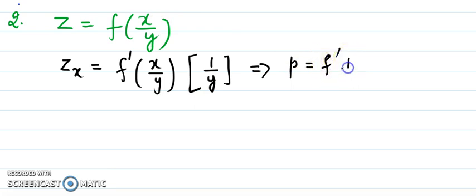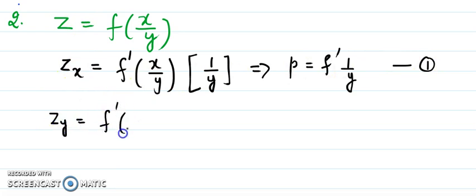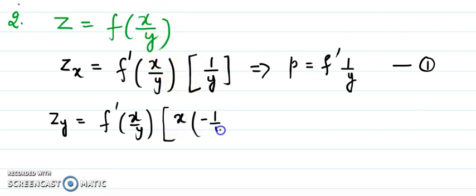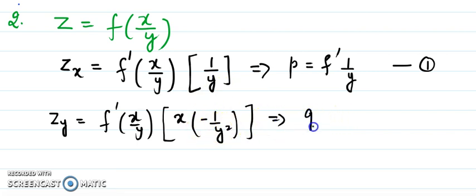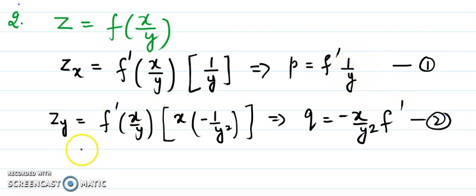Now differentiate with respect to y. We have f'(x/y), and the derivative of (x/y) with respect to y is -x/y². So q = f'(x/y)·(-x/y²). That is equation number two. From equation one, we can derive f' = p·y.